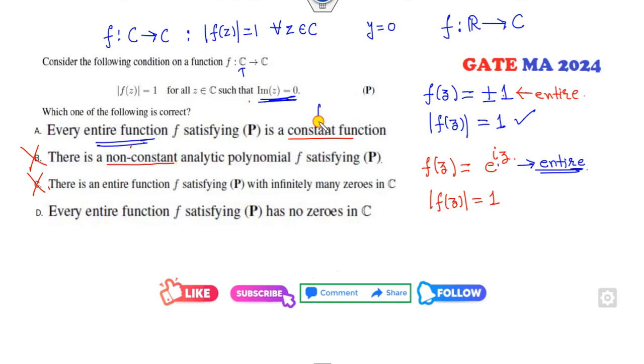So once this is an entire function, is it a constant? It is not a constant, so this option is also canceled. Does it have zeros? It has no zeros, so this is also the right answer. Only the correct option is D.